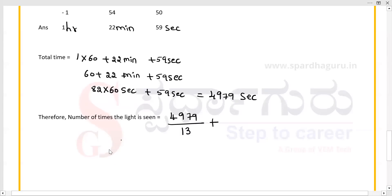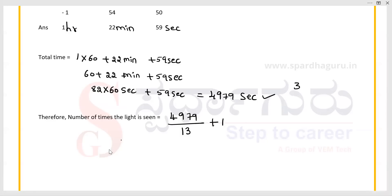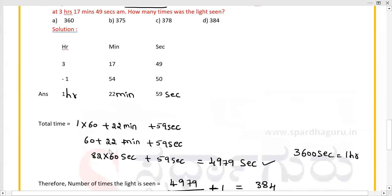Divide 4979 by 13, since the light was seen at intervals of 13 seconds. The result is 383, then add 1 because the light was also seen at the very first instance, giving 384. So the light was seen 384 times. Option D is the right answer.